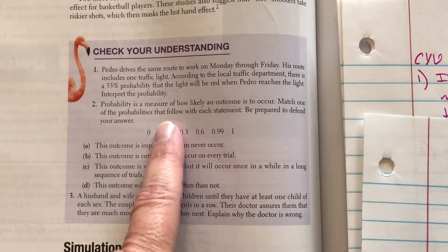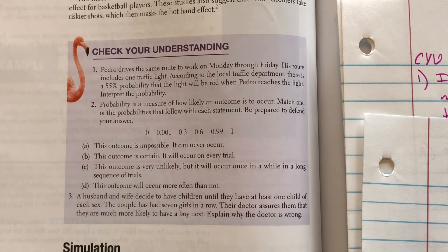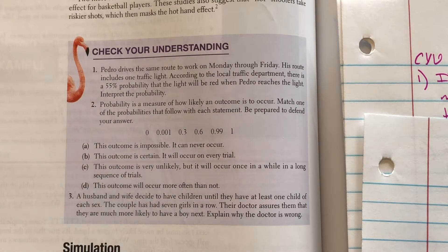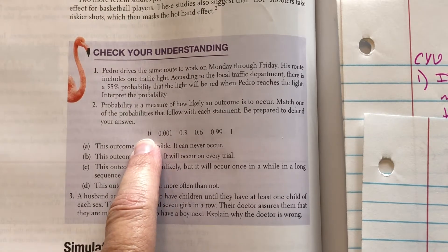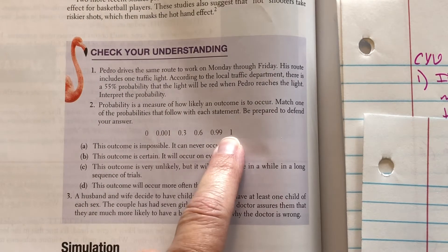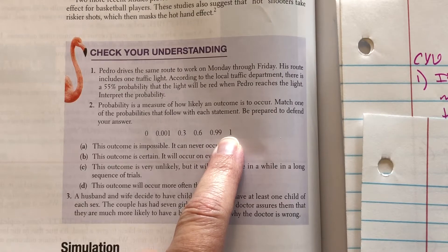All right, probability is a measure of how likely an outcome is to occur. Remember, probabilities are between 0 and 1. Match one of the probabilities that follows with each statement. Be prepared to defend your answer. So 0 means an event is not going to occur. 1, probability 1 means an event will occur.